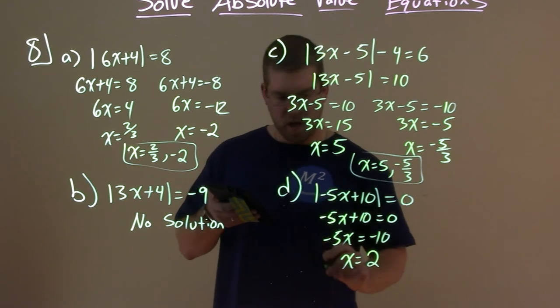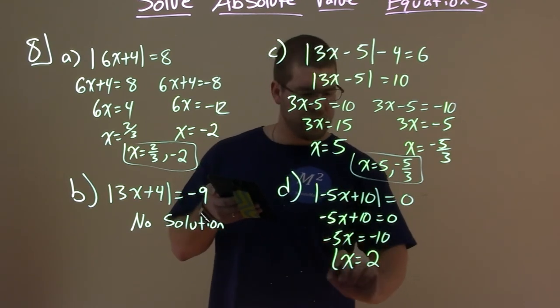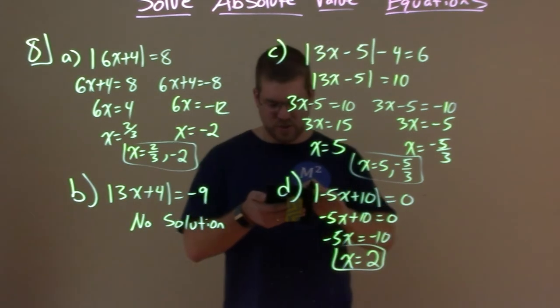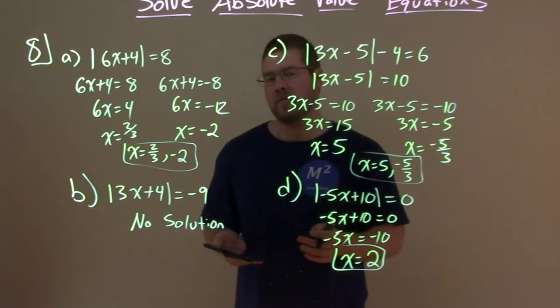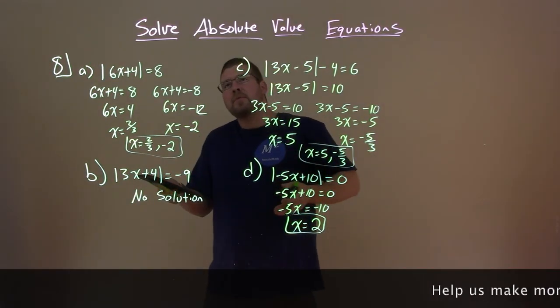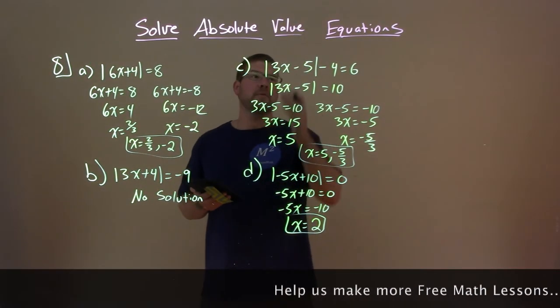Divide both sides by negative 5. And x equals negative 10 divided by negative 5 equals a positive 2. Two negatives make a positive. Two wrongs make a right, well, in math. So we have x equals 2 here as our answer. So now you've seen some examples and hopefully you learned how to solve absolute value equations.